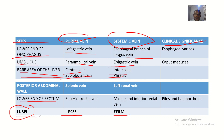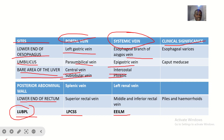The mnemonic for systemic veins is EEILM — the first E is esophageal branch of azygos, the second E is epigastric vein, I is intercostal vein (with a phrenic vein attached), L is left renal vein, and M is middle and inferior rectal veins.